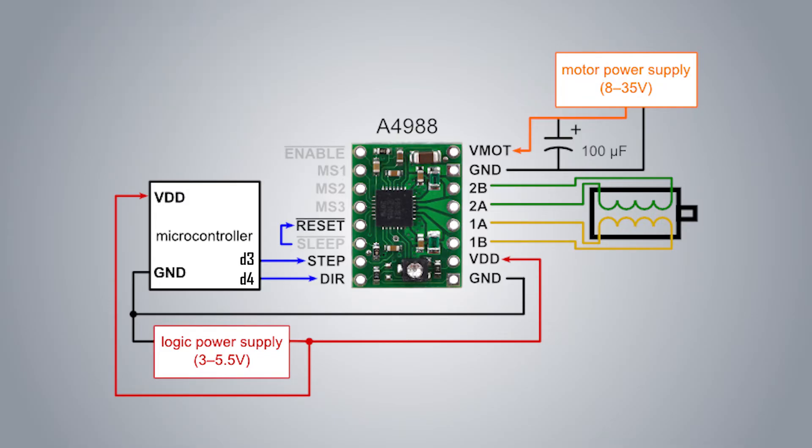It is also important to limit the current to the motor. You can do so by setting the potentiometer on the driver to around 30 degrees clockwise for 0.5 amps.